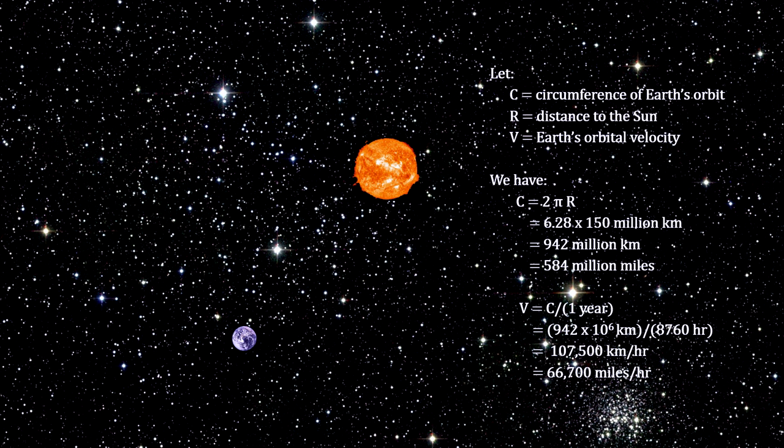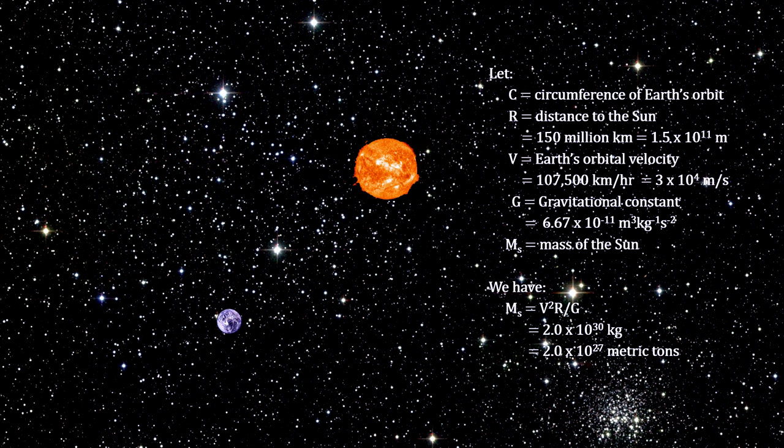Now, with the distance to the Sun and our velocity around the Sun known, we can use Newton's equations to calculate the mass of the Sun at 2,000 trillion trillion tons.